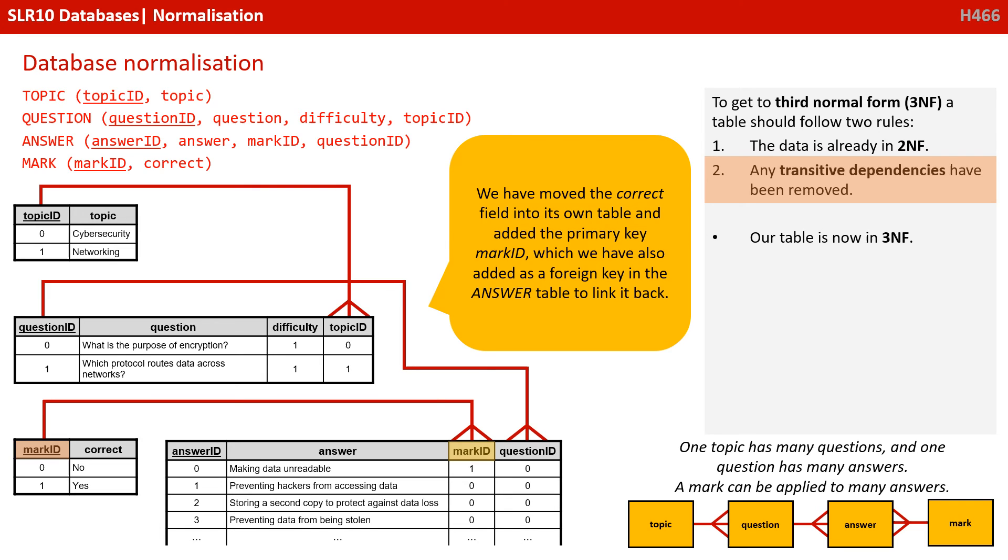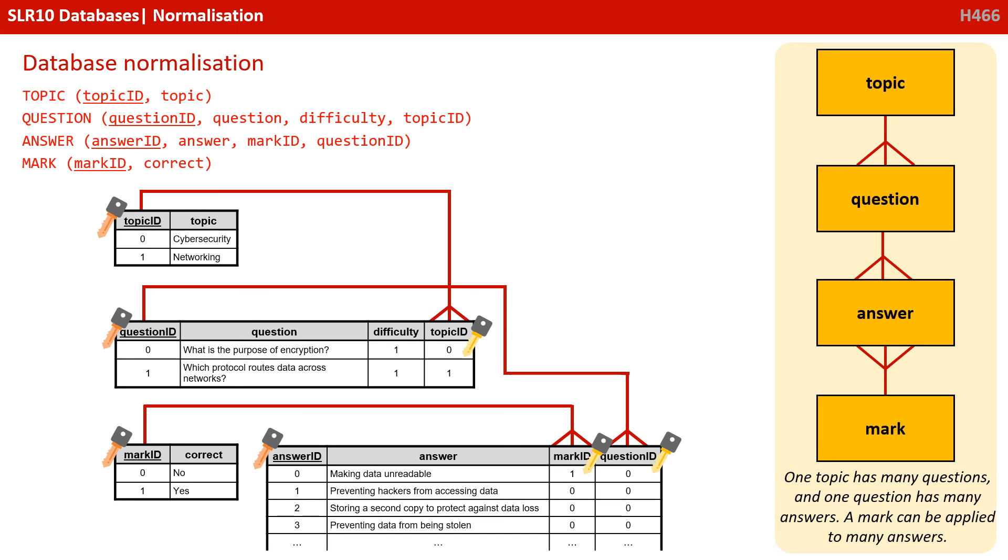If we look at the entity relationship diagram in the bottom right, we can see that one topic has many questions, and one question has many answers. We can also see that a mark can be applied to many answers. Here's what our final normalized database looks like. We've marked up the primary and foreign keys. And we've just enlarged the entity relationship diagram on the right, showing the relationships. You'll also notice throughout these examples, we've also been using a text based way of representing our database. And that's been shown at the top there. The table name is in capitals, followed by the list of fields for that table in brackets, separated by commas. And any fields which make up the primary key have been underlined. This is typical of what you'll see in the exam.